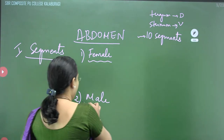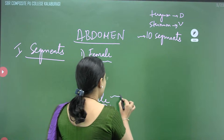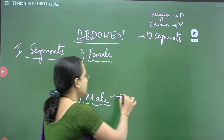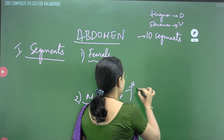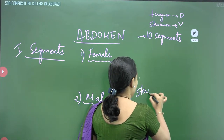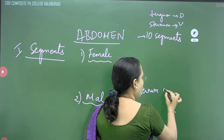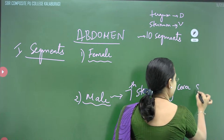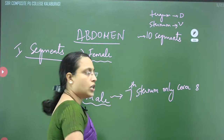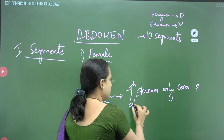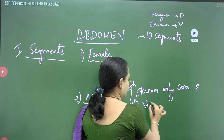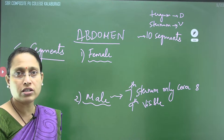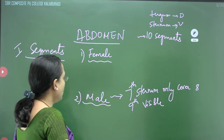Next will be the male segments. What happens to the abdominal segments in the male? In the male, the 7th sternum will only cover the 8th segment. Therefore, the 9th is visible — whereas in the female, the 9th was not visible.